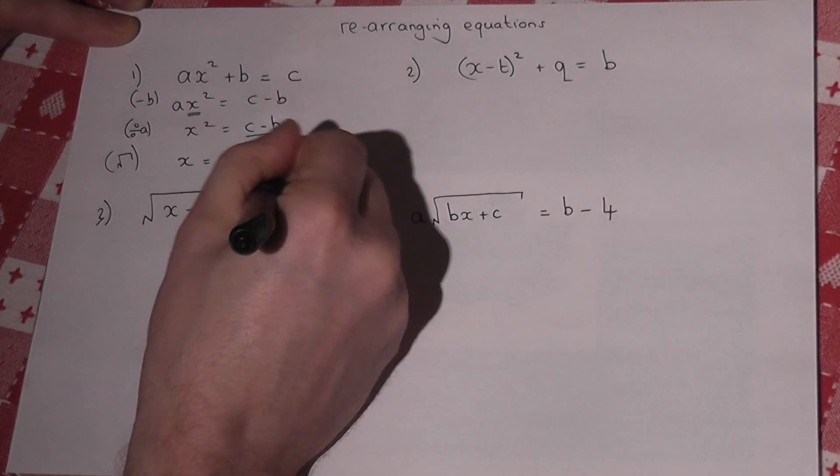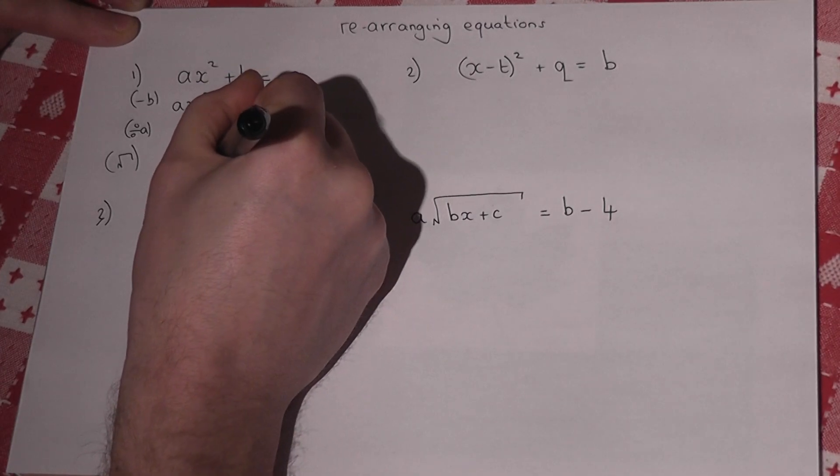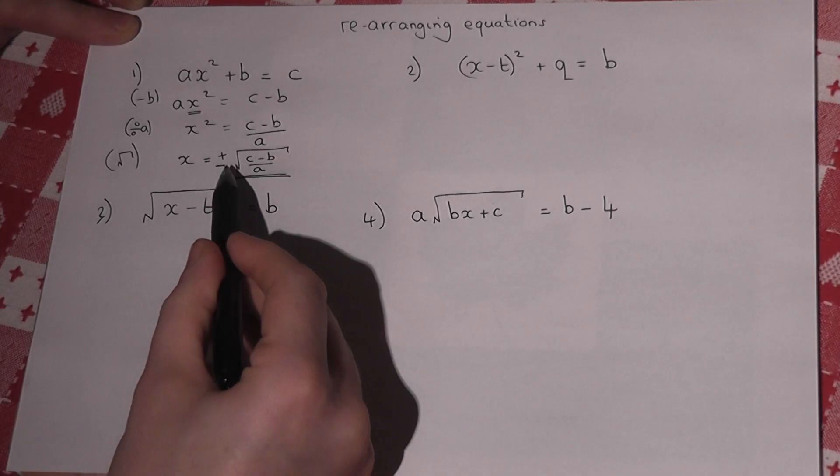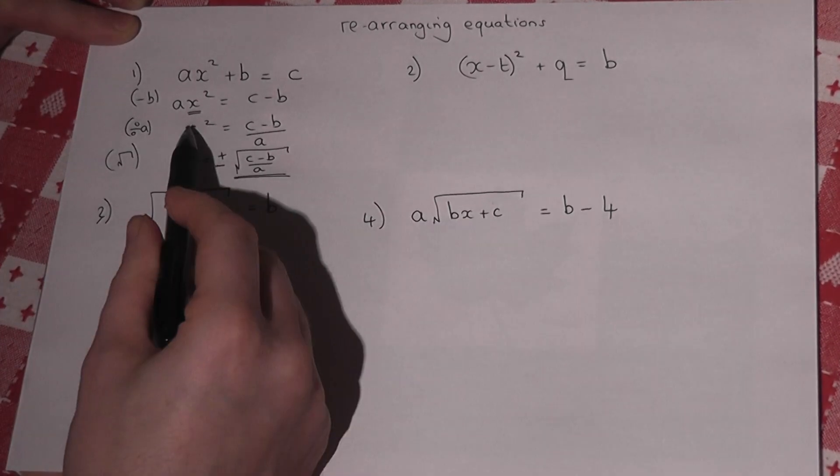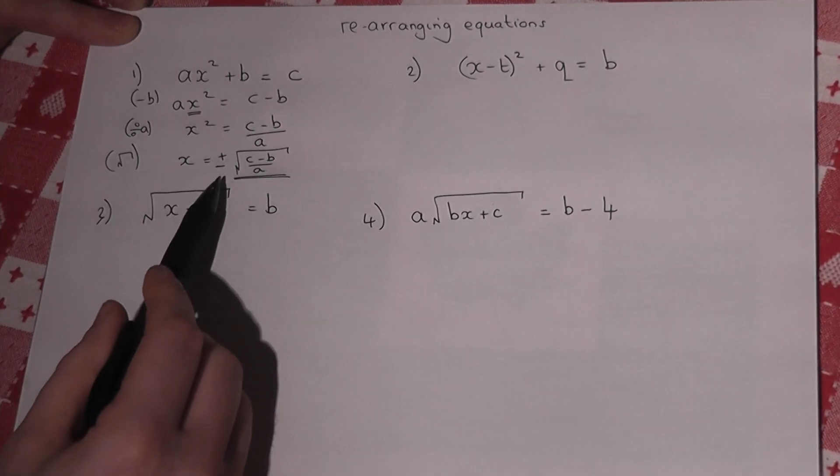But there's one really important thing to know, which is that it could be a plus solution or a minus solution, because when you square a negative or a positive, they both become the positive answer. So when you square root an equation to find x, there's a plus or a minus solution.